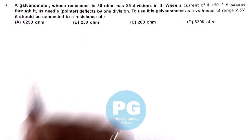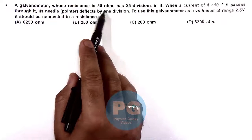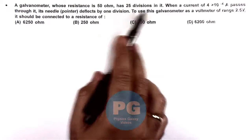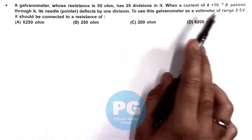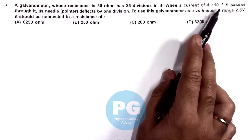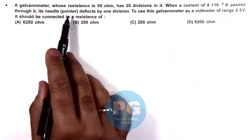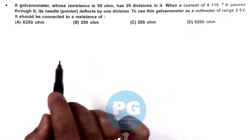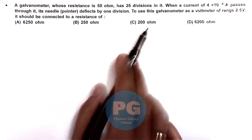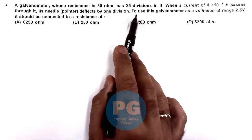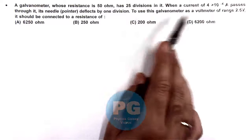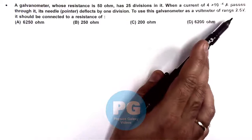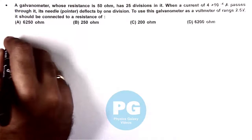In this question, a galvanometer of resistance 50 ohms has 25 divisions. When a current of 4×10⁻⁴ ampere passes through it, its needle deflects by one division, giving us the current sensitivity. We need to use this galvanometer as a voltmeter of range 2.5 volts. It should be connected with a resistance of...